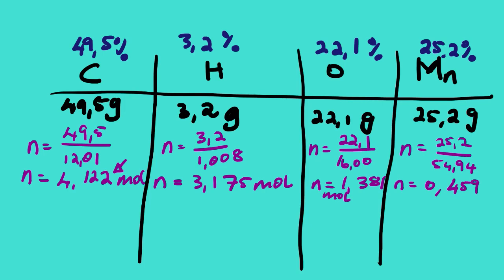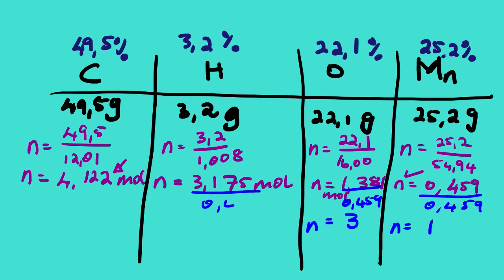Now we compare all these numbers of moles. We can see that the smallest is 0.459 for manganese. So we are going to divide each number of moles by 0.459. Carbon gives us approximately 9. Hydrogen: 3.175 divided by 0.459 gives us approximately 7 when we round off.